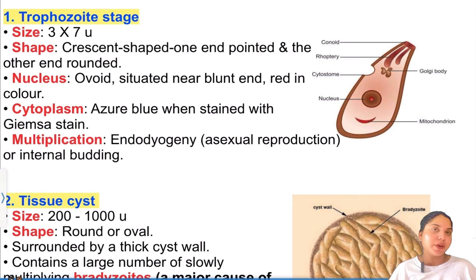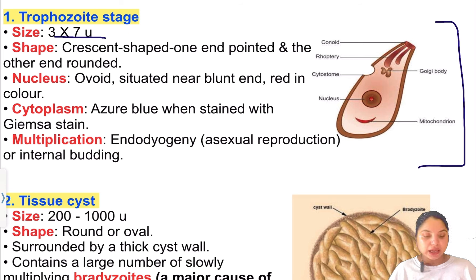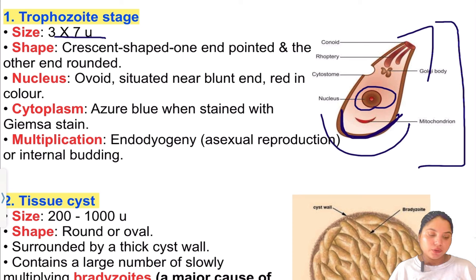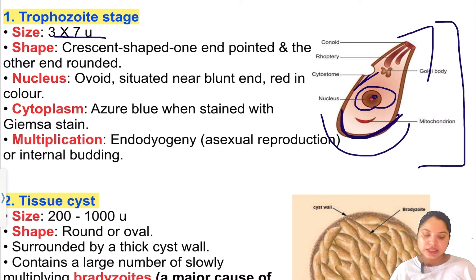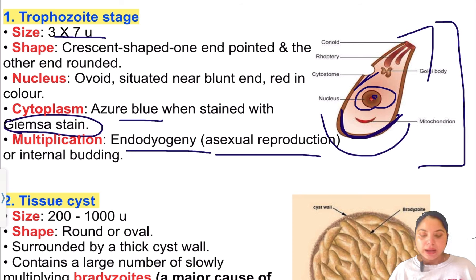The first stage is the Trophozoite stage. Its size is 3×7 microns. The shape is crescent — one end is pointed and one end is rounded. The nucleus is situated near the blunt end. The nucleus is red in color and the cytoplasm is blue when stained with Giemsa stain. Multiplication is by asexual reproduction called endodyogeny, which is internal budding.